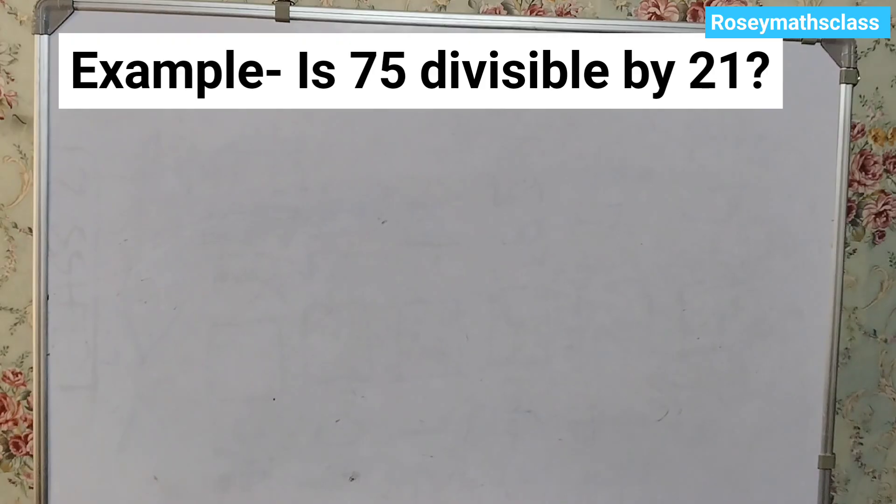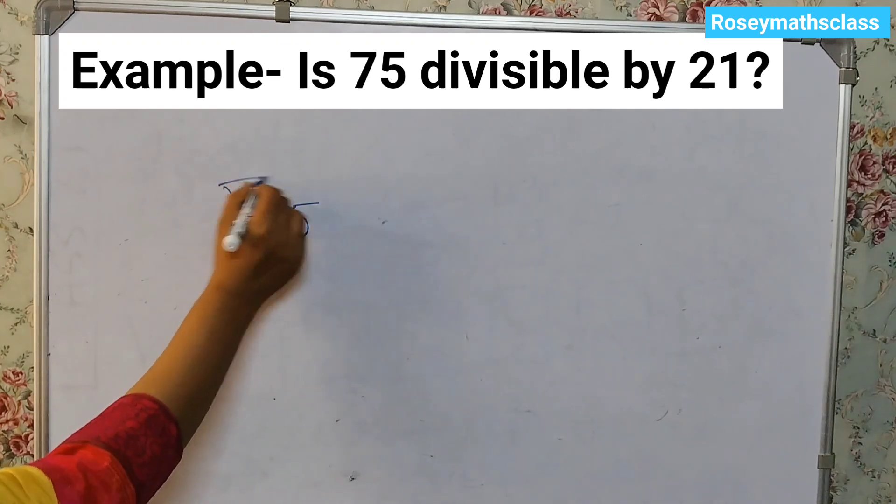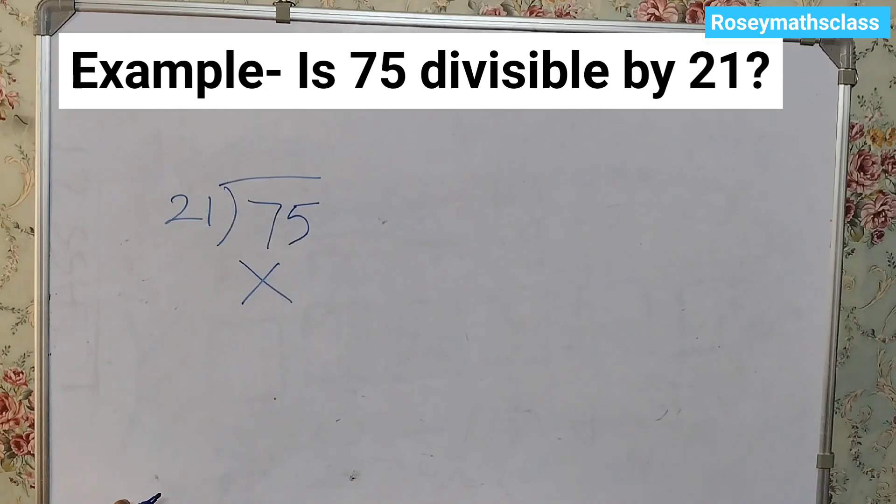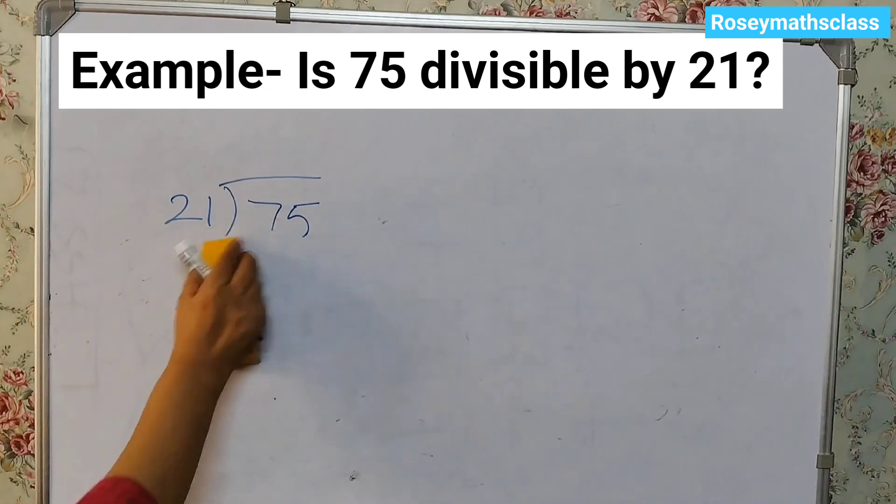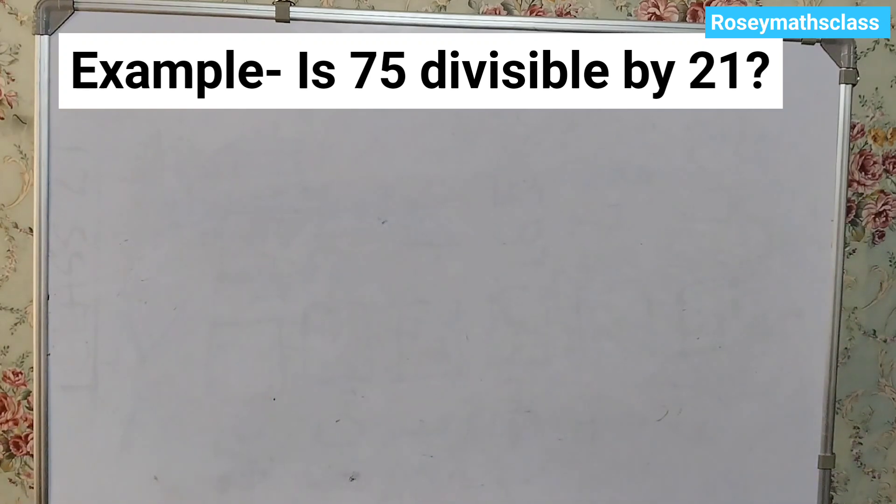The first one is: is 75 divisible by 21? We can use the division method, 75 divided by 21, and we can do it. However, here we need to use prime factorization. So we will not use this method. Here we will find the prime factors of 75 and 21 first.